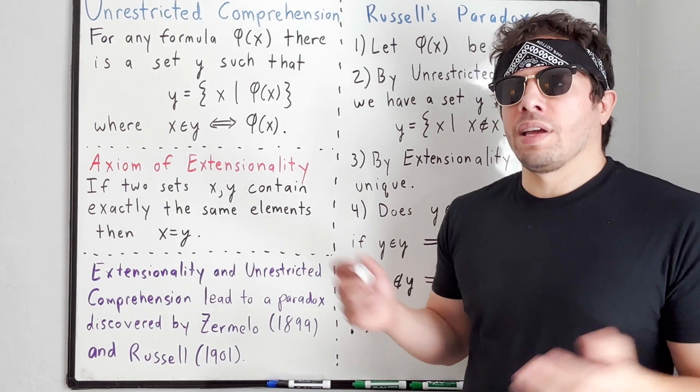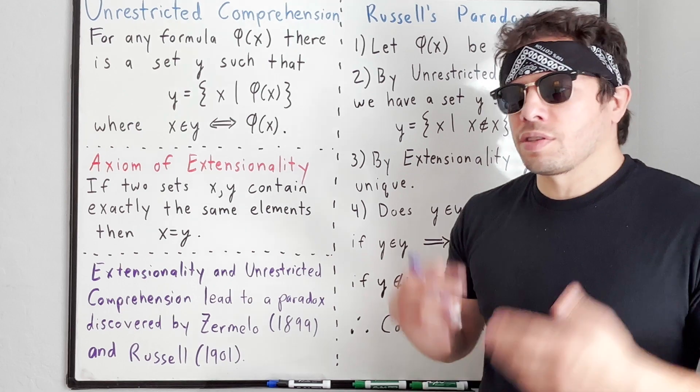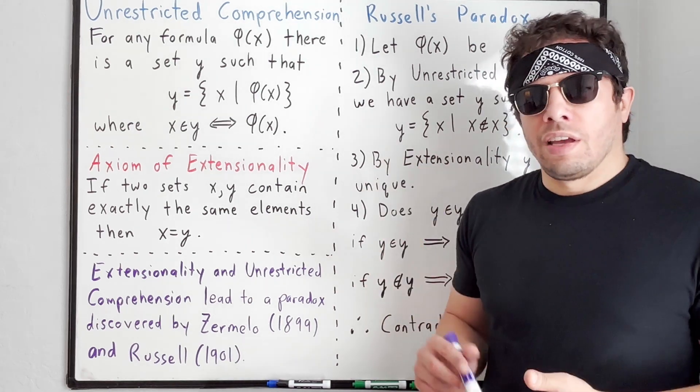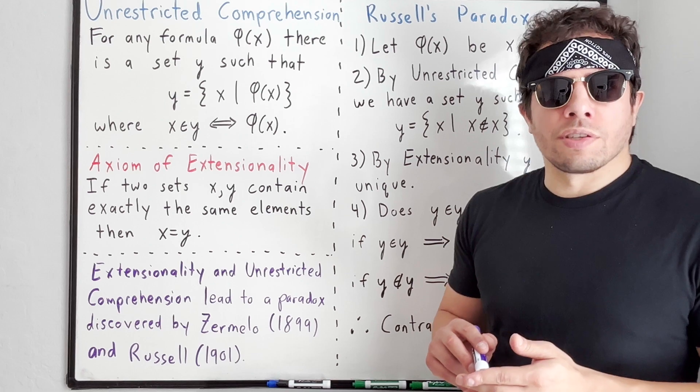For example, he doesn't have a membership symbol or the element of symbol that we find in set theory and mathematics today. Instead, Frege had this theory of concepts and their extensions, and although it's philosophically interesting, it's a little beyond what we're going to discuss today.